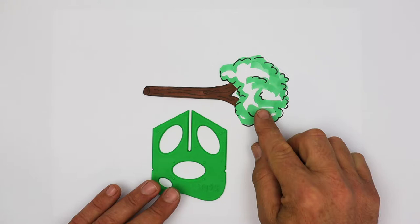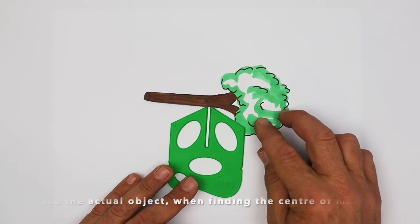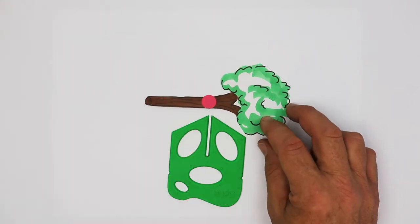As this branch falls towards the ground, can you guess, will it fall straight down or will it rotate one way or the other? First step is finding the centre of mass like we did before. Find that sweet spot where it balances and we'll mark that with the pink dot.